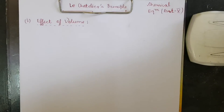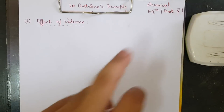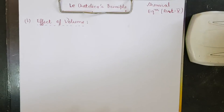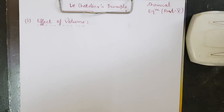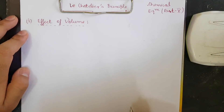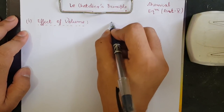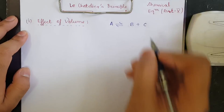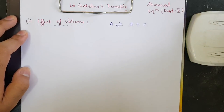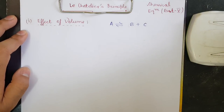Welcome to the video on Le Chatelier's Principle — chemical equilibrium part 5, the last one. Please watch till the end because I'll be deriving very important things here using simple mathematics rather than cramming. Le Chatelier's Principle states that whenever we have an equilibrium, it tries to resist the change that is occurring on it.